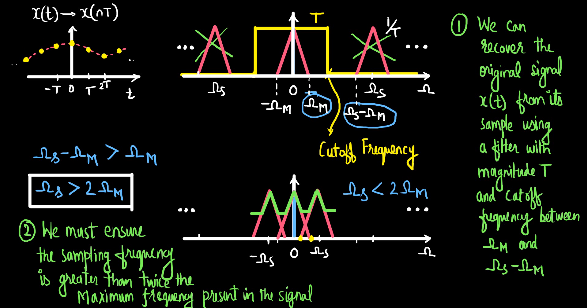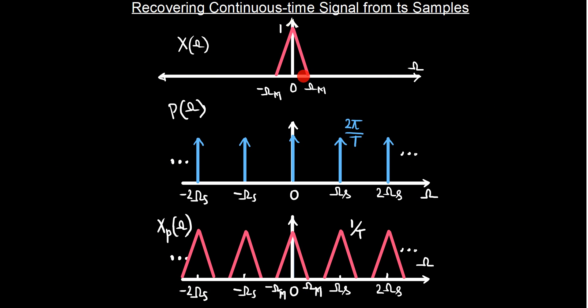This is a very beautiful result — this theorem is called the sampling theorem. It states that if a signal x is band-limited, meaning it has frequencies present only within a certain range and is zero otherwise, then we can recover back the signal from its samples if we ensure the sampling frequency is at least twice the maximum frequency present in the signal. We shall see more into this in the next module.